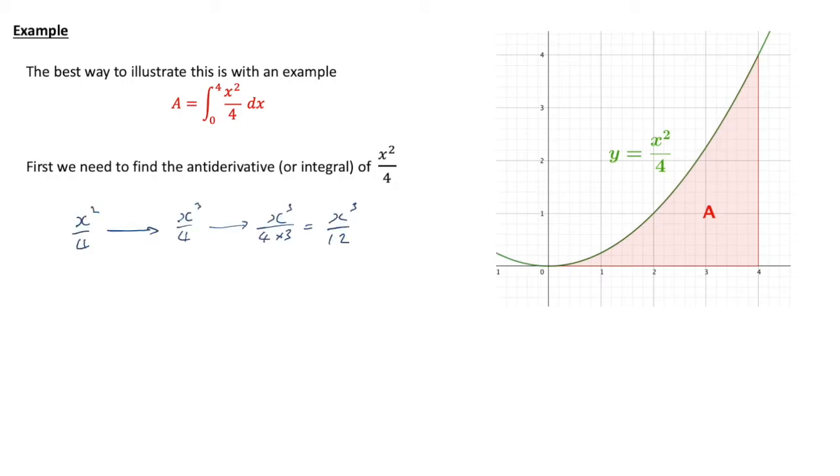We'll use our procedure. We start with x-squared over 4, we add one to the power which gives us x-cubed over 4, and then we divide by the new power. So on the bottom now we're already dividing by 4, but also we're now divided by 3 as well, so that gives us x-cubed over 12.